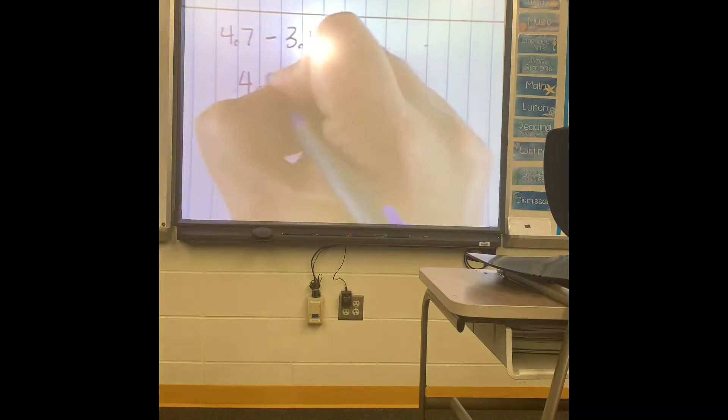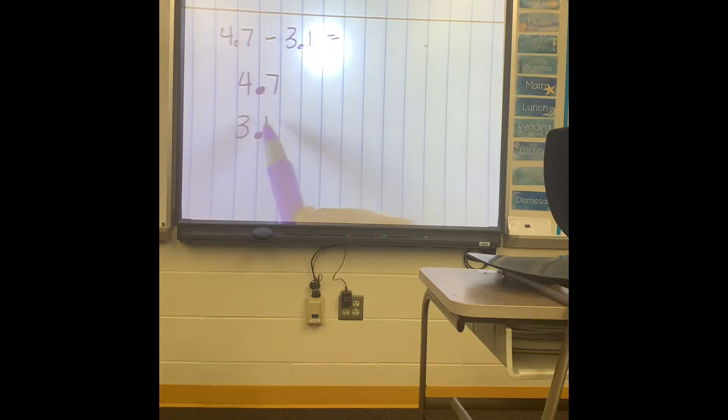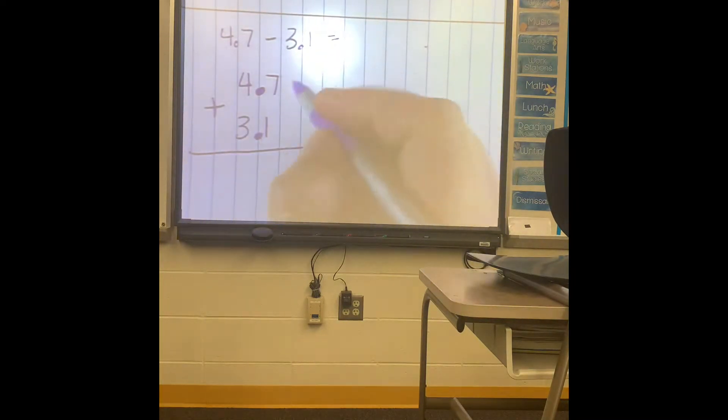Step number one is to put those decimals down. Step number two is to line up the decimals. So notice my 4 is in the ones spot along with my 3. My 7 is in the tenths spot along with my 1. I don't have anything that I need to fill a zero with. And now you just add. 7 plus 1 is 8, 4 plus 3 is 7. Bring down your decimal, and your answer is 7.8.